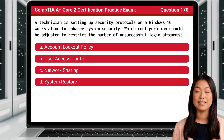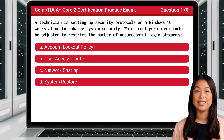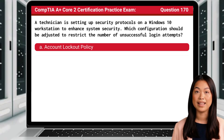Question 170. A technician is setting up security protocols on a Windows 10 workstation to enhance system security. Which configuration should be adjusted to restrict the number of unsuccessful login attempts? The answer is A: Account lockout policy.